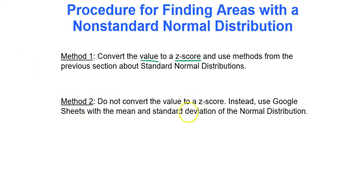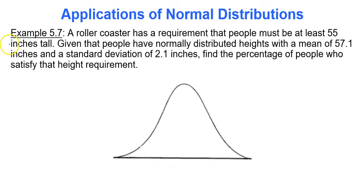Method two, do not convert the value to a z-score. Instead, use technology, in this case Google Sheets, with the given mean and standard deviation of the normal distribution. So instead of a mean of zero and a standard deviation of one, they will give us a specific mean and a specific standard deviation in the question. We just need to take note of those two numbers.